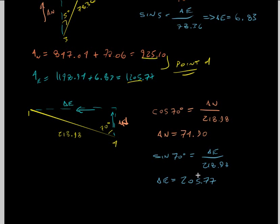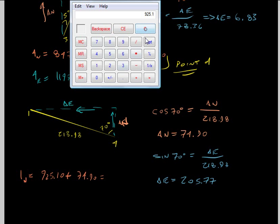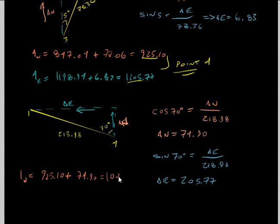We're just going to apply this to our coordinates of point 4 and see what we get. The northing of point 1 equals 925.10 plus 74.90, which equals 1,000.